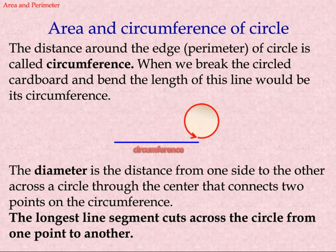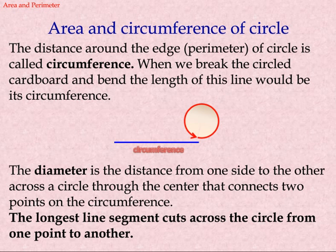Area and circumference of circle. The distance around the edge, or perimeter, of a circle is called the circumference. The diameter is the distance from one side to the other across a circle through the center, connecting two points on the circumference. It is the longest line segment that cuts across the circle from one point to another.